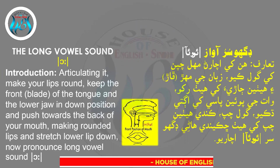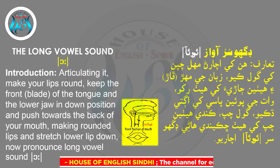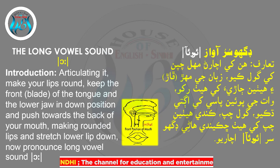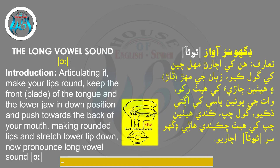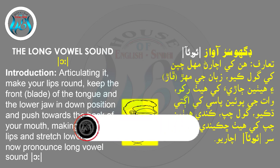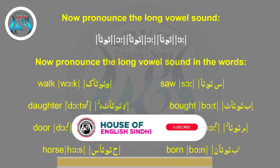The long vowel sound /ɔː/: articulating it, make your lips round, keep the front blade of the tongue and the lower jaw in down position, and push towards the back of your mouth, making rounded lips and stretching the lower lip down. Now pronounce the long vowel sound. Now pronounce the long vowel sound in the words.